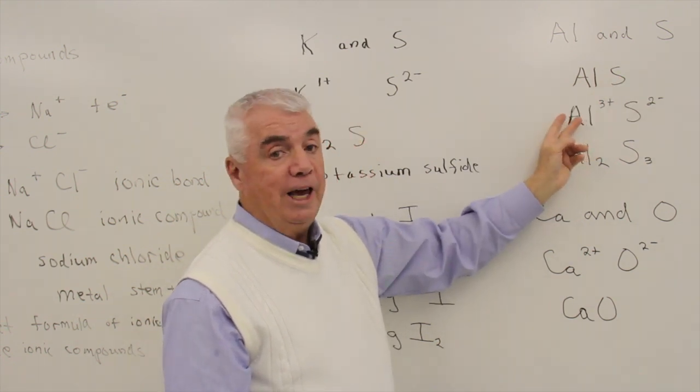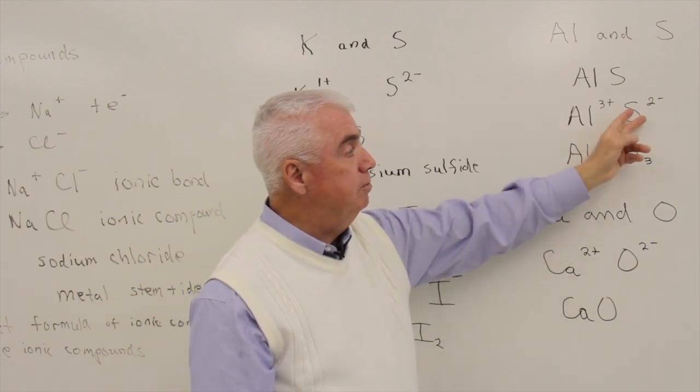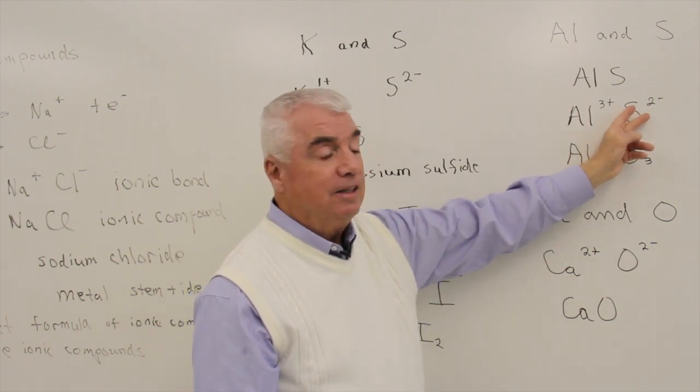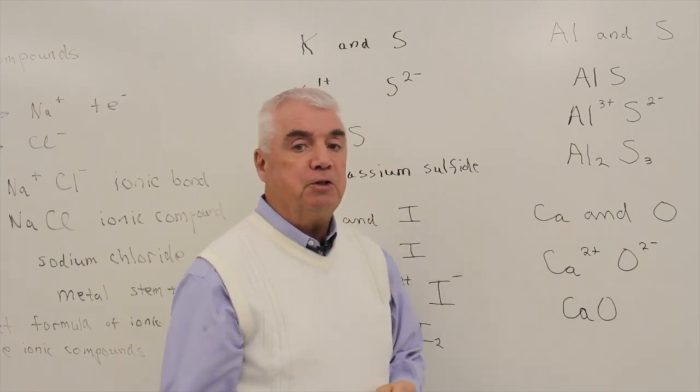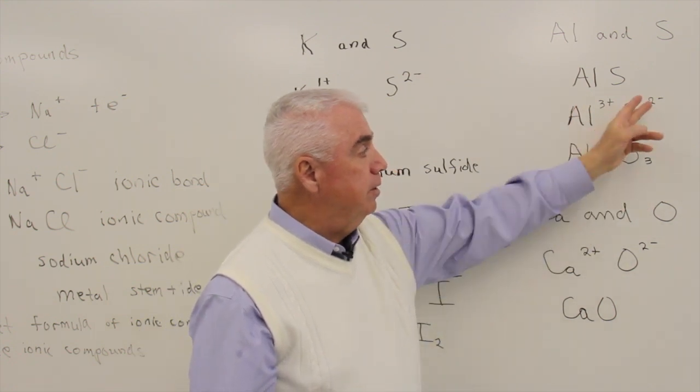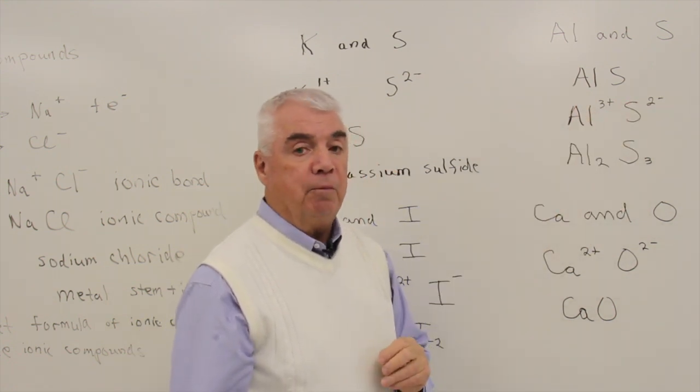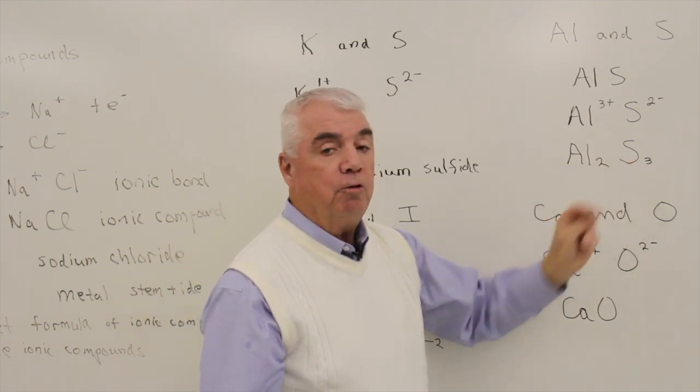Aluminum in group 3A, so it likes to form a 3+. Sulfur is in group 6A, so it likes to form a 2-. And now let's switch those numbers and use them as subscripts. The 3 comes down with the sulfur. The 2 comes down with the aluminum. Here's the formula for aluminum sulfide.